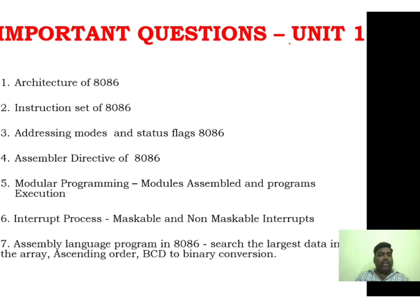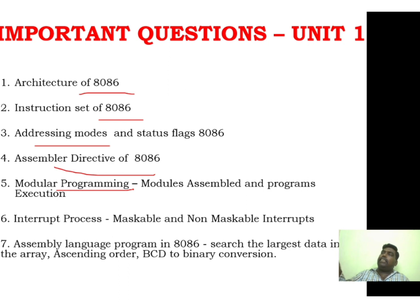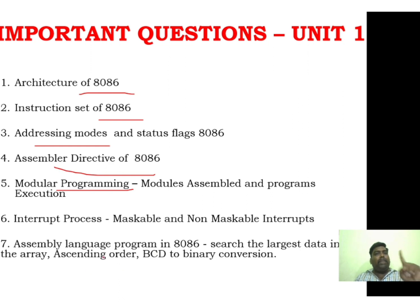In Unit 1, there are 7 questions, but the first 5 questions are very important. You can see the architecture, instruction sets, addressing modes, and assembler directives of 8086. Programming is also very important. You can see the interrupt process, instruction sets, interrupts, and addressing modes. For programming, try to learn at least 3 programs: largest data, ascending order, and BCD to binary conversion.